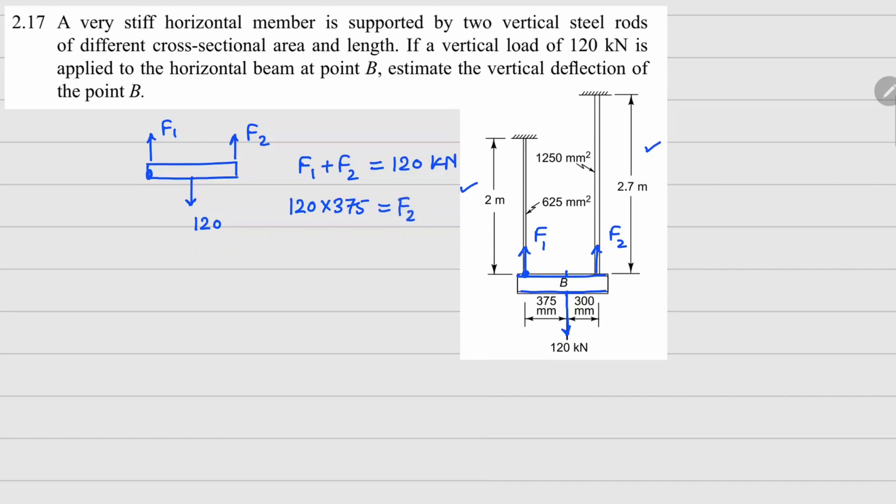F2 times 675. From these equations I can solve the value of F1 and F2. Your F1 is 53.3 kilonewtons and F2 is 66.7 kilonewtons.